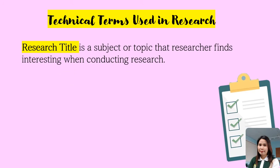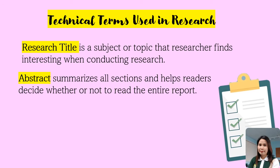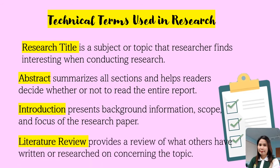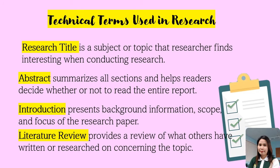First, we have research title — it is a subject or a topic that a researcher finds interesting when conducting a research, and it needs to be narrowed down to focus on the main idea. Next, we have the abstract, which summarizes all sections and helps readers decide whether or not to read the entire report. We also have introduction, which presents background information, scope, and focus of the research paper. Next, we have the literature review, which provides a review of what others have written or researched on concerning the topic, and demonstrates knowledge and understanding of the academic literature on a specific topic.